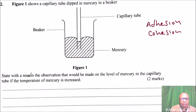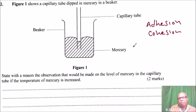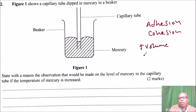The question states: give, with a reason, the observation that would be made on the level of mercury in the capillary tube if the temperature of mercury is increased. When you increase the temperature, the volume will go up.